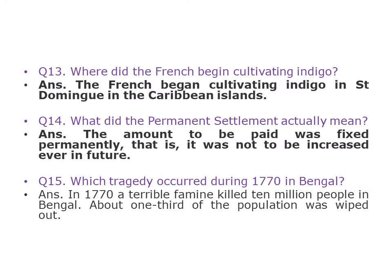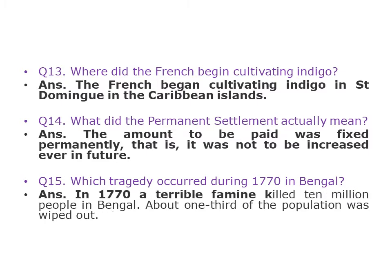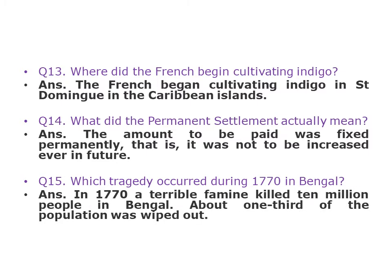Q15: What tragedy occurred during 1770 in Bengal? In 1770, a terrible famine killed 10 million people in Bengal. About one third of the population was wiped out.